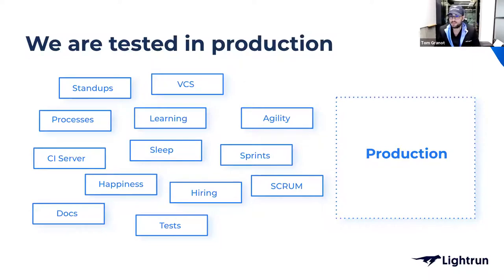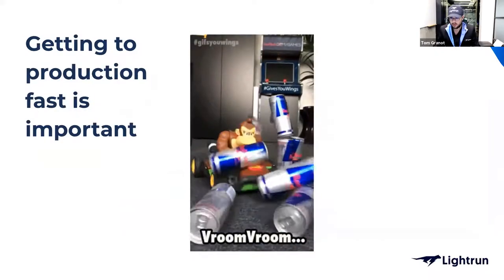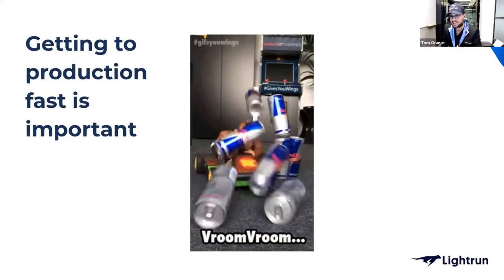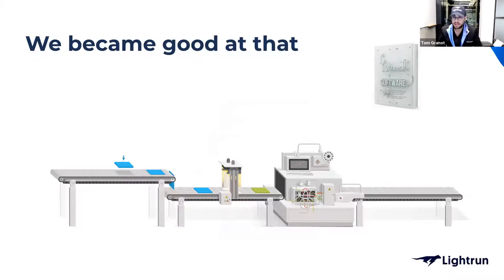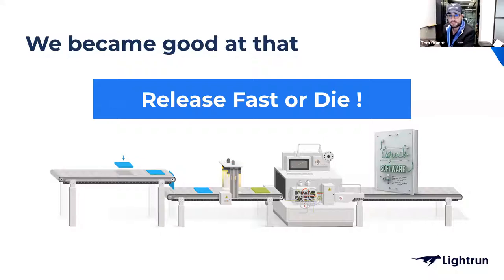We have all these things that happen before we get software into production — processes, programmers, infrastructure — but the only thing that matters is that little box on the right that says 'production.' As software engineers, we've gotten pretty good at getting to production fast. JFrog even wrote a book about it called 'Liquid Software,' which details the concept of a CI/CD pipeline that gets lines of code from developer machines into production as fast as possible.